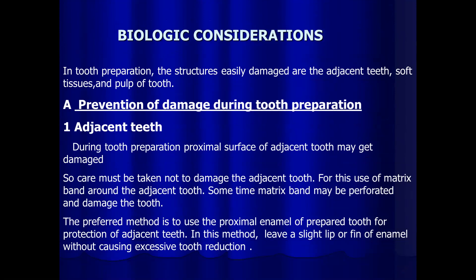Under biological considerations in tooth preparation, the structures most easily damaged are the adjacent teeth, soft tissue, and the pulp. When we prepare the tooth and cut an excess amount of enamel or dentin, the pulp may be exposed. Prevention of damage during preparation must be considered.